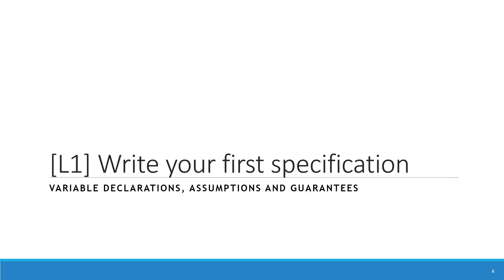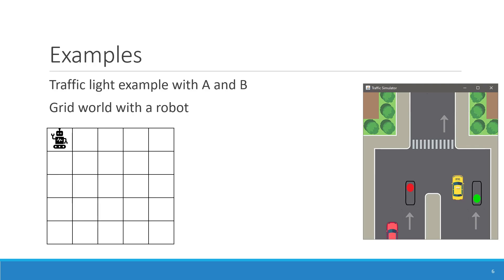Welcome to the first module of this tutorial. First we will learn how to write our first specification. We will look at variable declarations, assumptions, and guarantees. The examples we are going to follow are a traffic light example and a grid world with a robot moving between grids. But first we have to see how to create our first Spectra project.